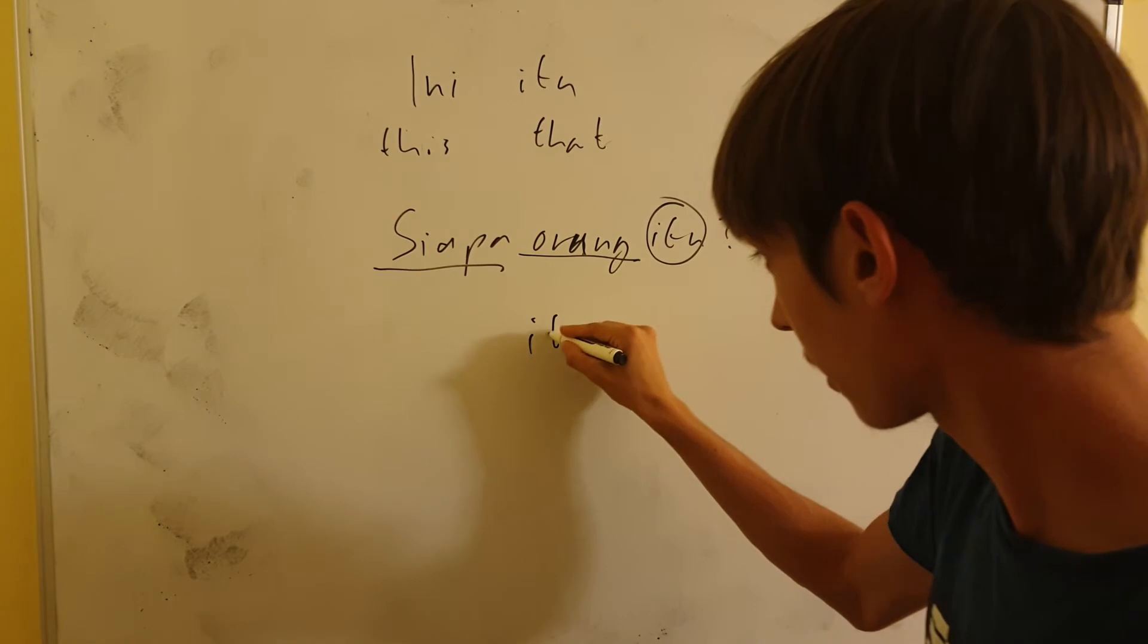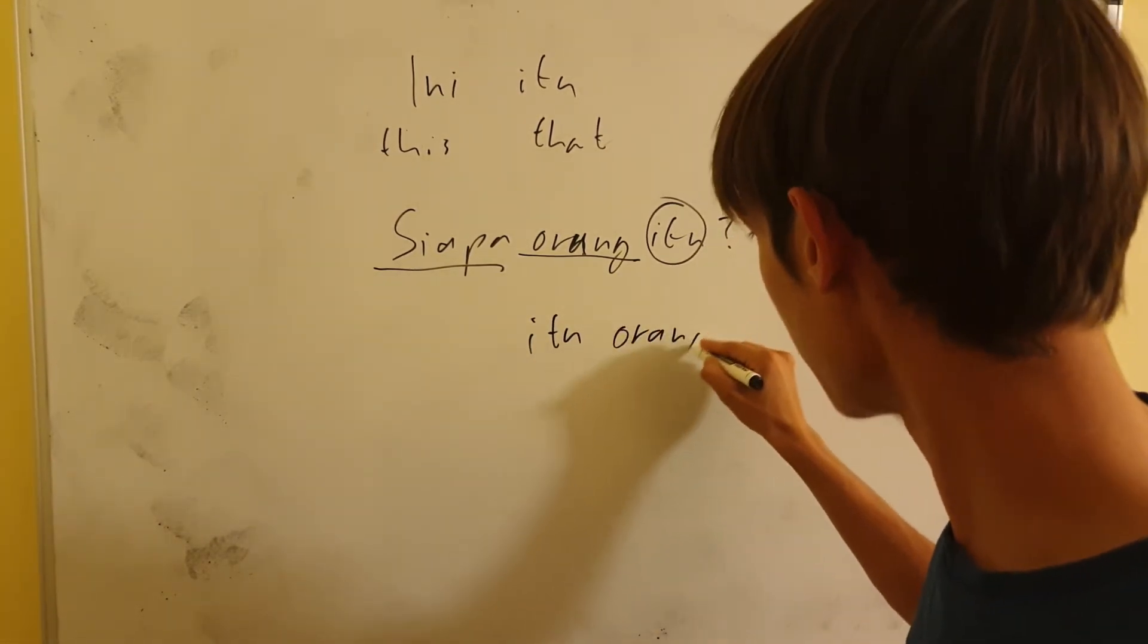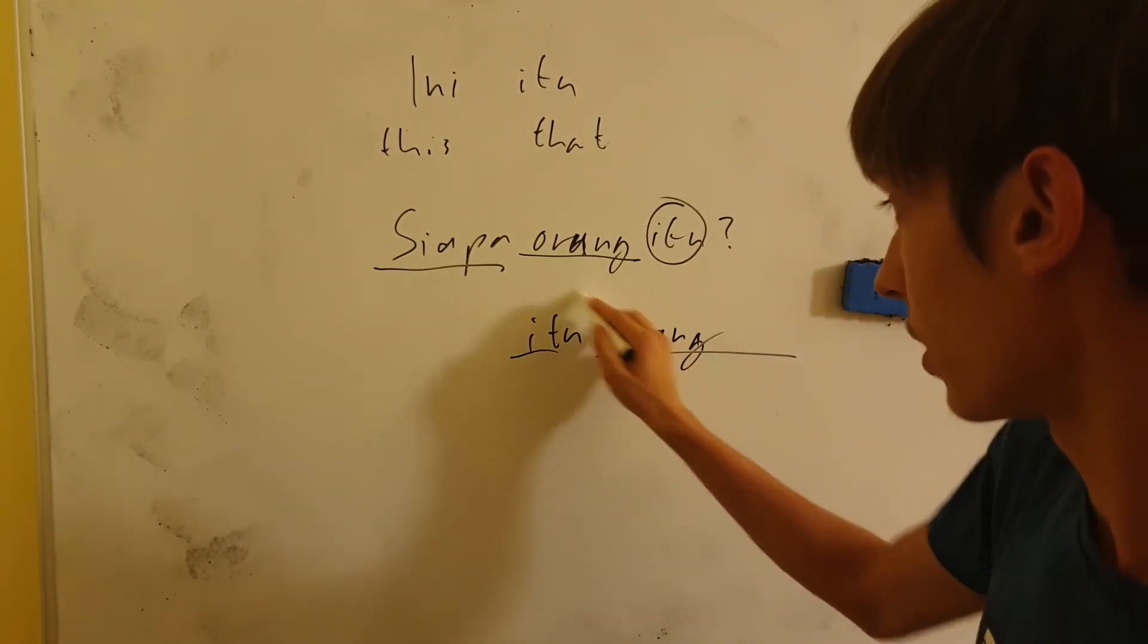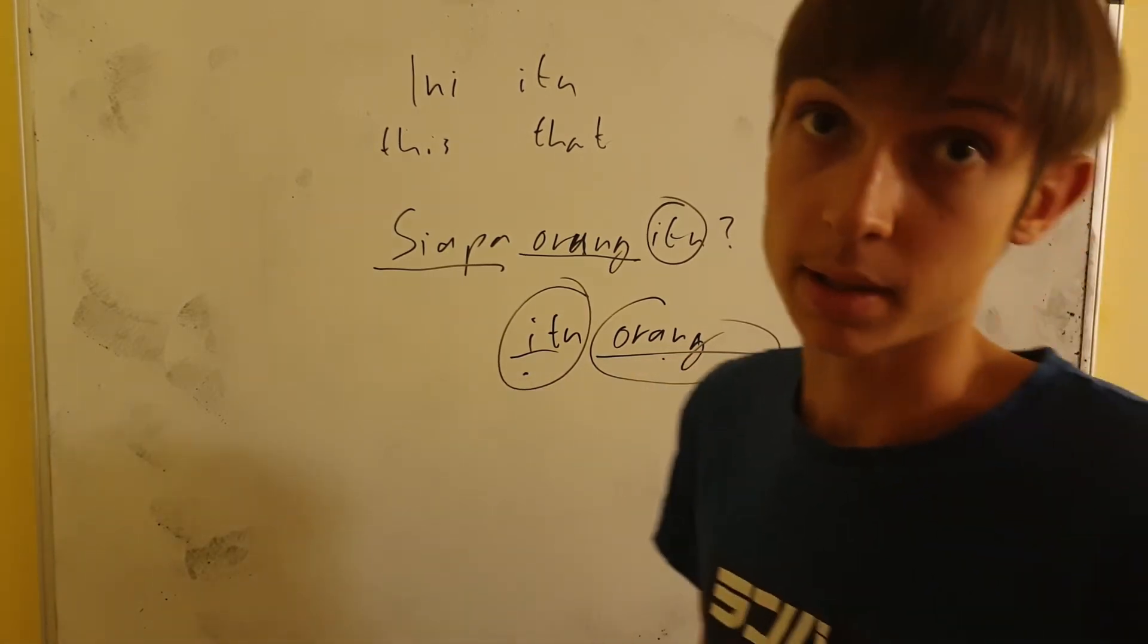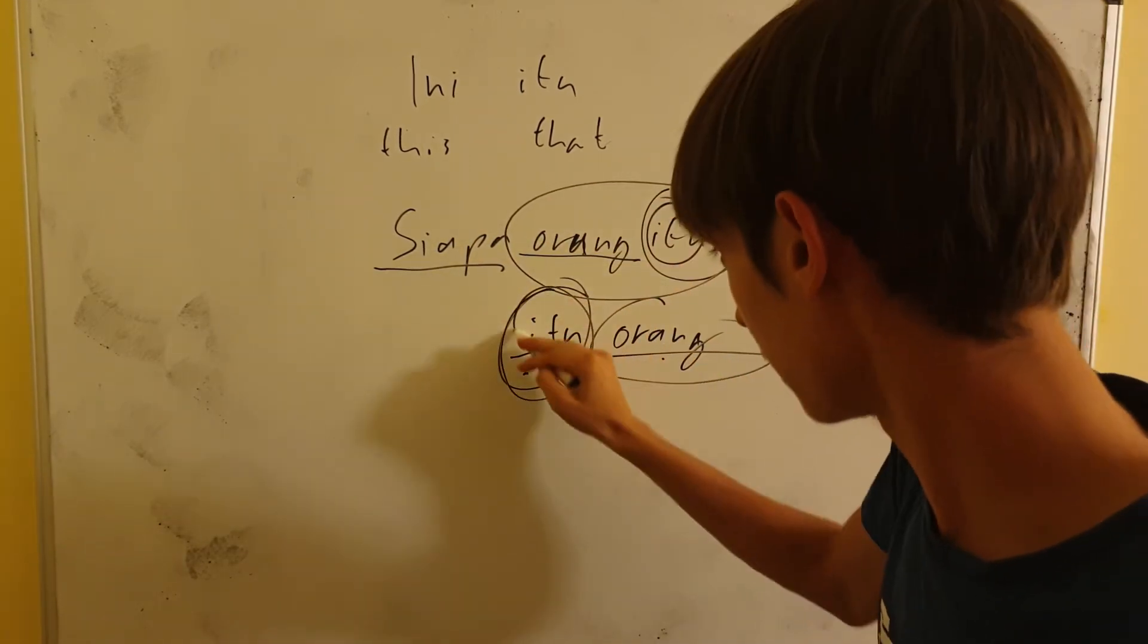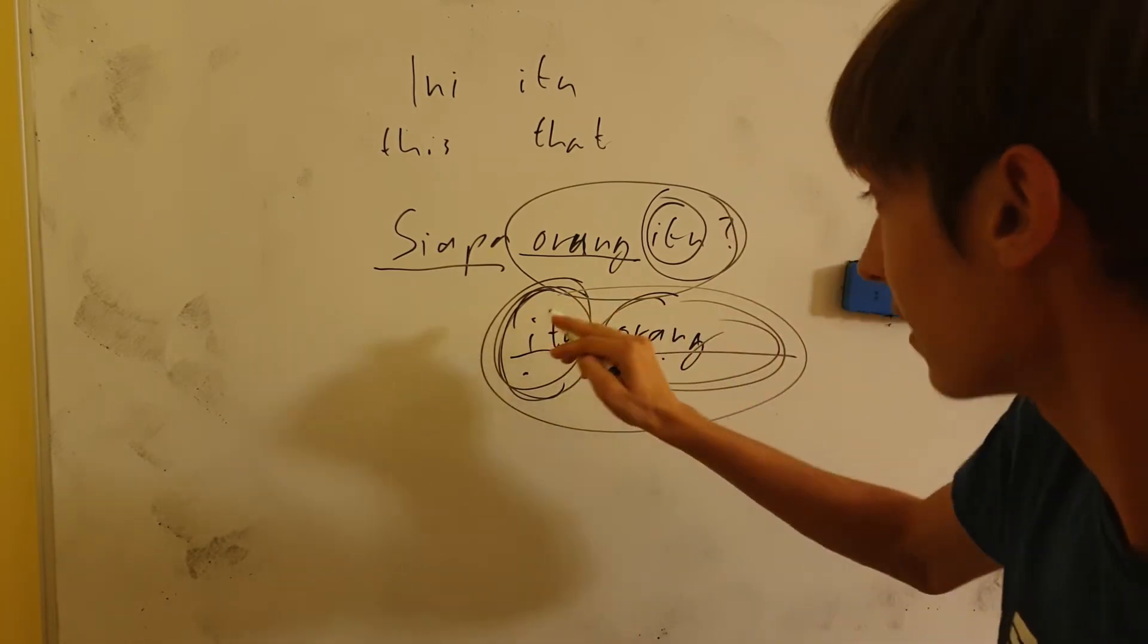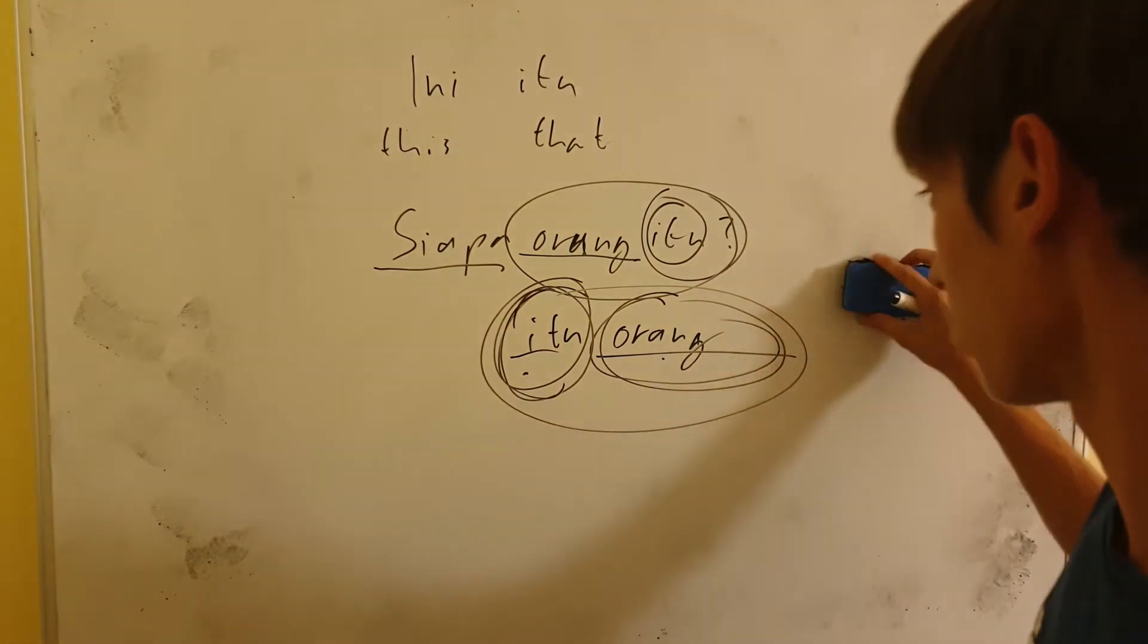And you don't say ITU ORANG, because that would already mean something else. ITU ORANG, because we don't use the word BE, it just means that is a person. So, ITU ORANG is that and person. But it's not like that person. You would have to put ITU after it for it to be pointing at that person. But when you just place, this is the subject and this is the object. So, this is already a sentence where you're saying that is a person without the word BE in between there. So, that's the reason why it's like that.